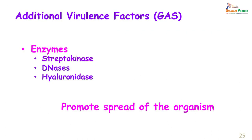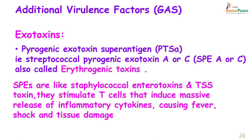Additional virulence factors consist of enzymes that promote spread: streptokinase, DNases, and hyaluronidase. Streptokinase is also used clinically for dissolving clots in acute myocardial infarction. The exotoxins which can cause very severe infection are the pyrogenic exotoxin super antigens — SPE A — also called pyrogenic exotoxins A or C, earlier referred to as erythrogenic toxins. These SPEs are super antigens, similar to the staphylococcal TSS toxin. They stimulate T cells to induce a massive release of inflammatory cytokines causing fever, shock, and tissue damage. Haemolysins — cytolytic streptolysins S and O — are another group of exotoxins.